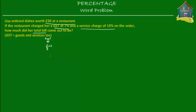For this problem, what Lisa did was she bought dishes at a restaurant that were worth $30. So the price of her dishes was $30. But on top of that, the restaurant charged her a 7% goods and services tax and a 10% service charge.